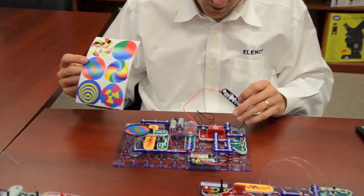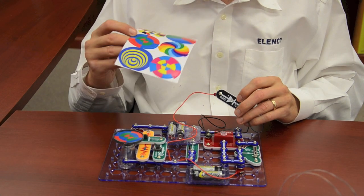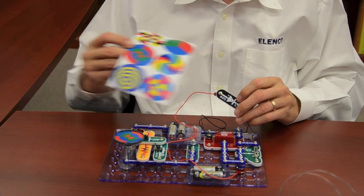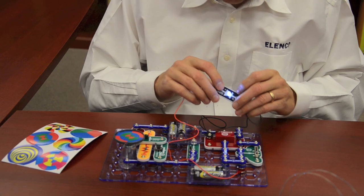Next, we are going to show you a strobe light circuit. We have a strobe light and we are going to have some spinning discs. We give you lots of different patterns.